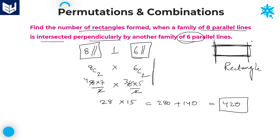Therefore, the number of rectangles that can be formed by a family of 8 parallel lines perpendicular to another family of 6 parallel lines is 420 rectangles. I hope you understand all the problems in this session. Thank you very much for watching.